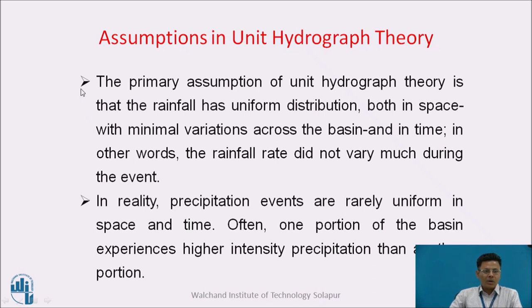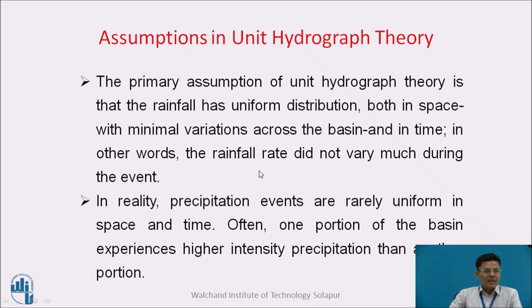There are certain assumptions in unit hydrograph theory, because rainfall is a natural process and we need to approximate certain things. The primary assumption is that rainfall has uniform distribution both in space — with minimal variations across the basin — and in time, meaning the rainfall rate did not vary much during the event. In reality, precipitation events are rarely uniform in space or time. Often, one portion of the basin experiences higher intensity of rainfall while another experiences less. But we need to assume this so that we get a unit hydrograph which is useful for predicting further stream flow.